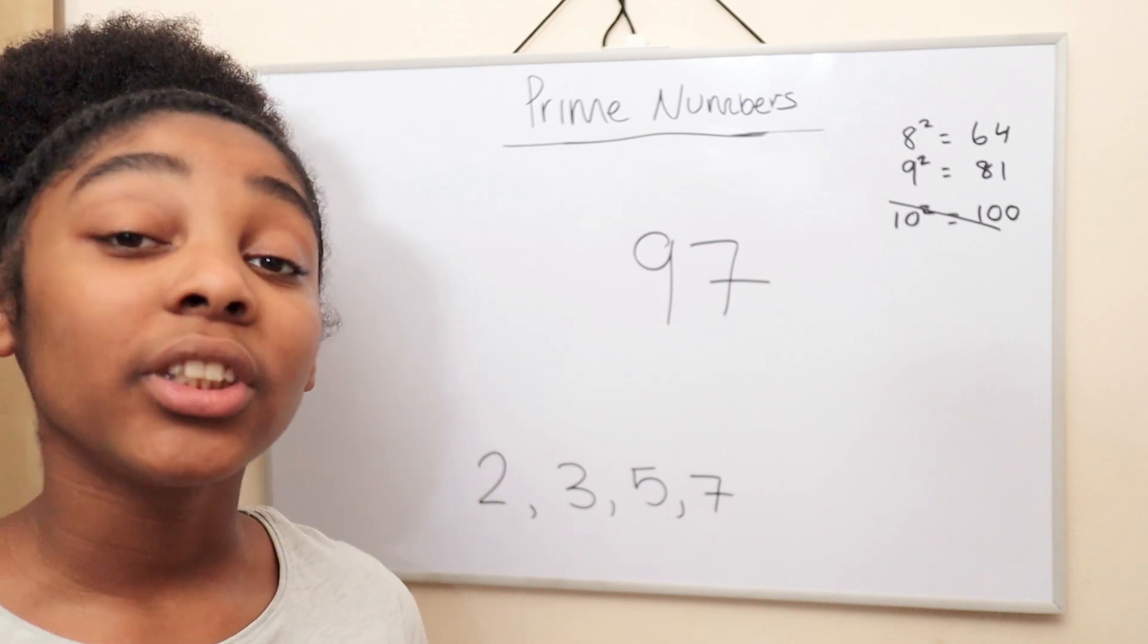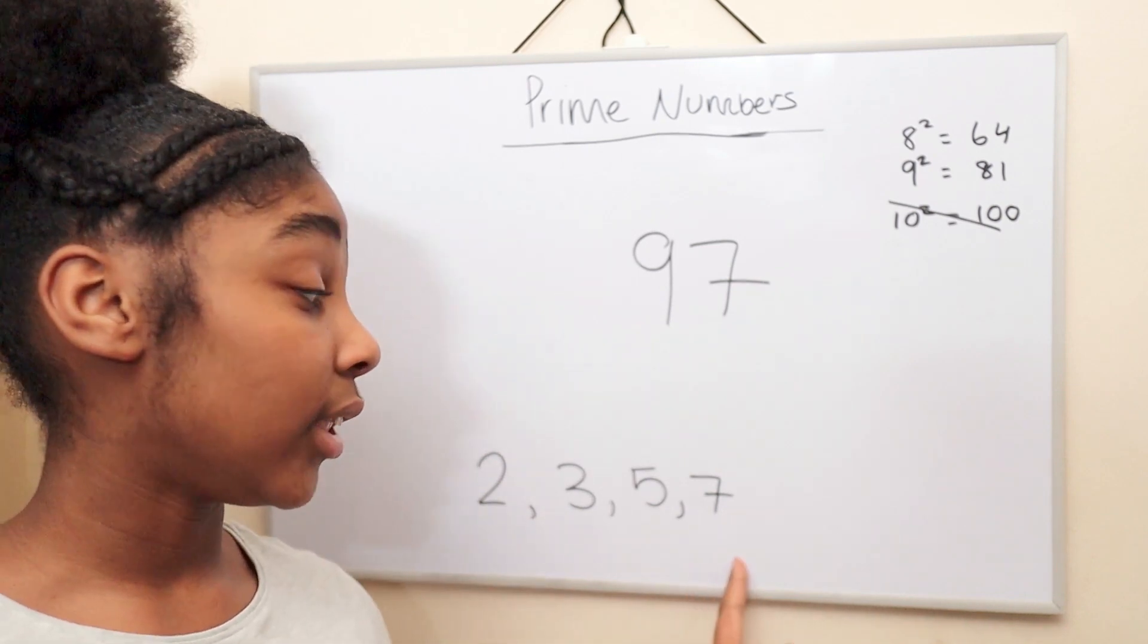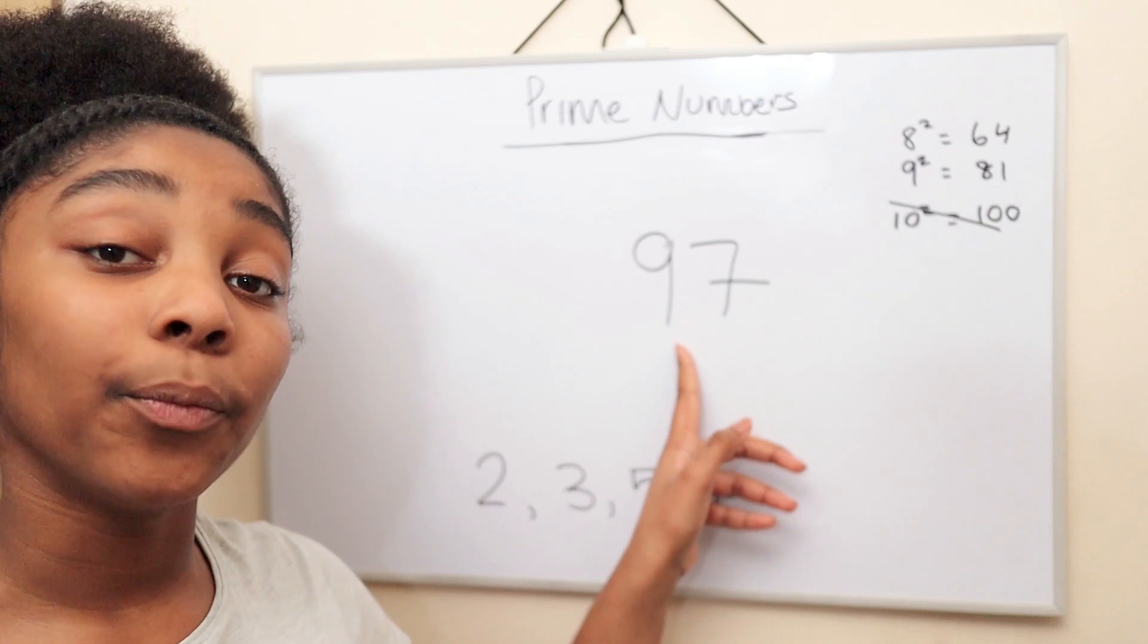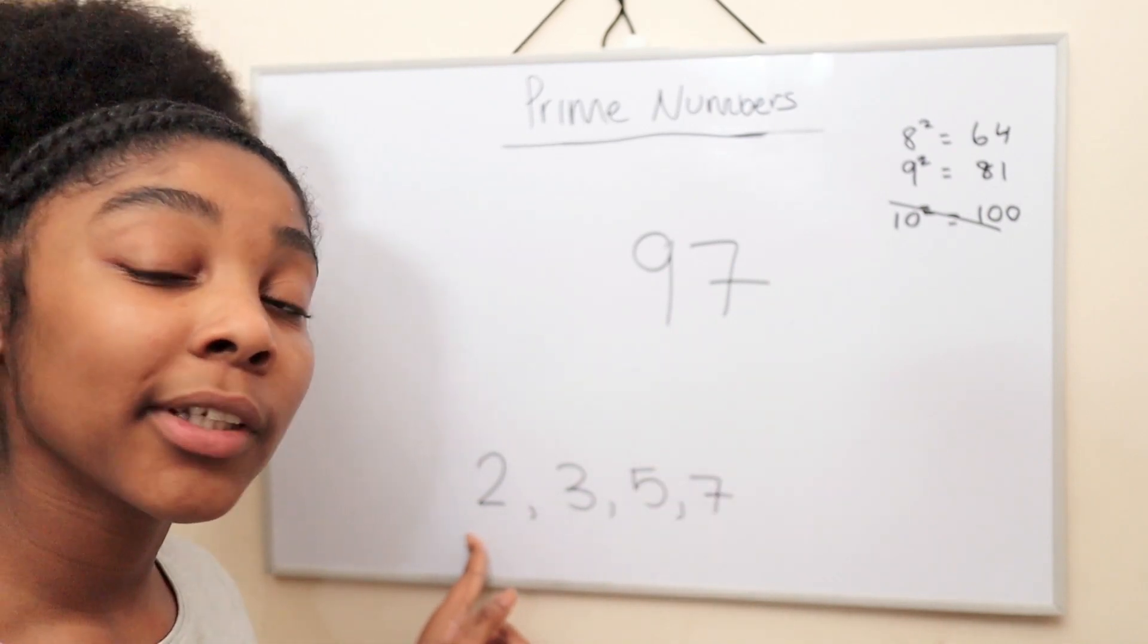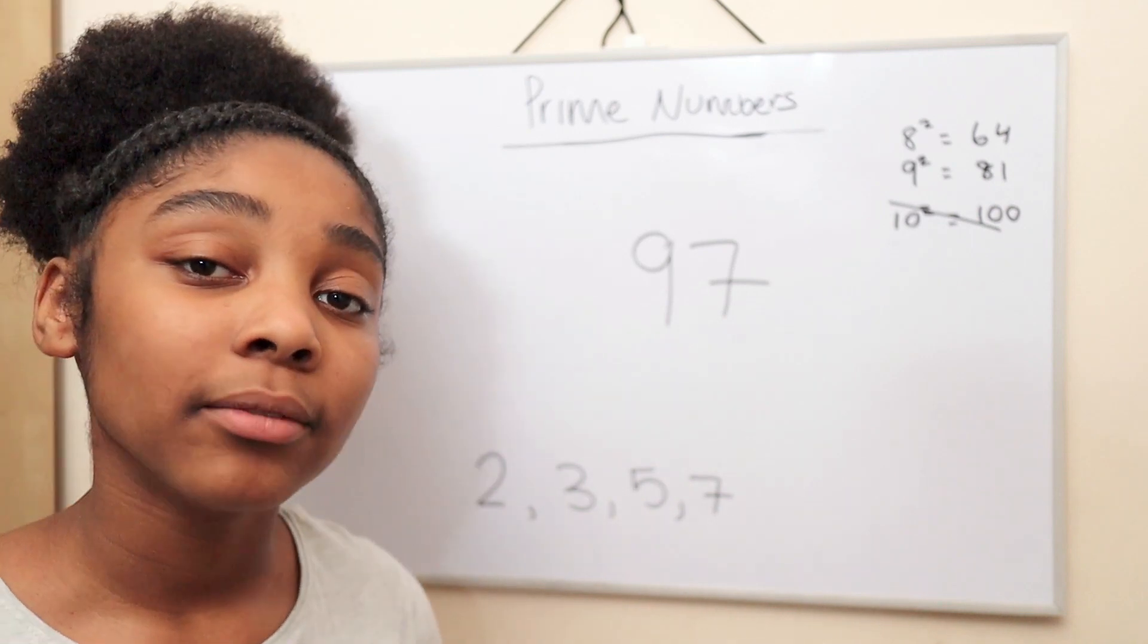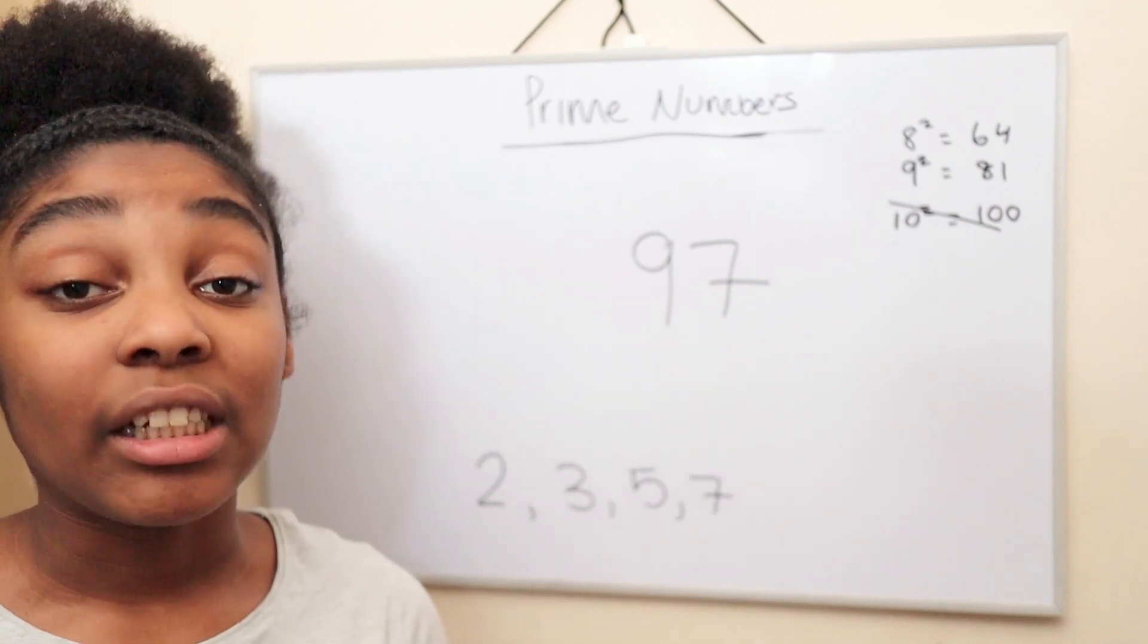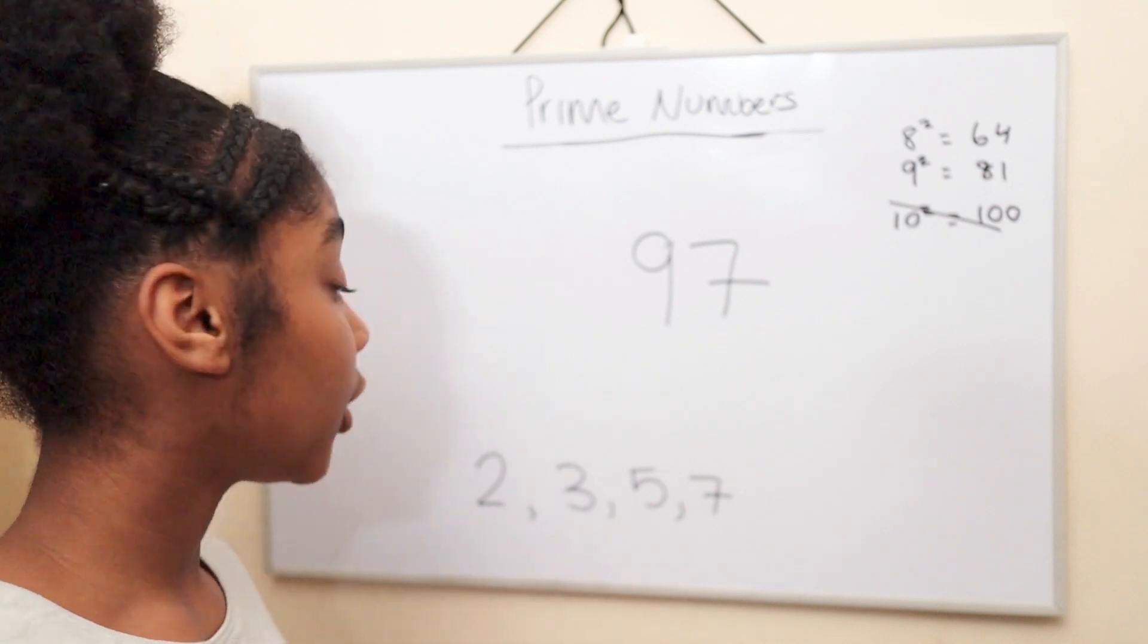Next, we'll need to see if either of these numbers go into 97. Can 2 go into 97? No. But why? Because 97 isn't an even number. So we can cross out 2.